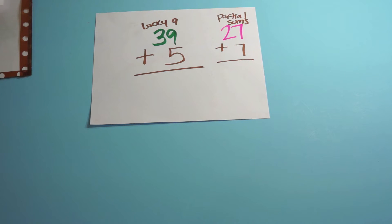So you show the kids 39 plus 5, they should rely on lucky 9, right? 39 turn it into a 40 plus 4, you get 44. Or say you see 27 plus 7, use partial sums. You have 7 plus 7 which is 14 and plus 20. 20 plus 14 is 34. You want your kids to be able to add like that with those single digit and double digits.